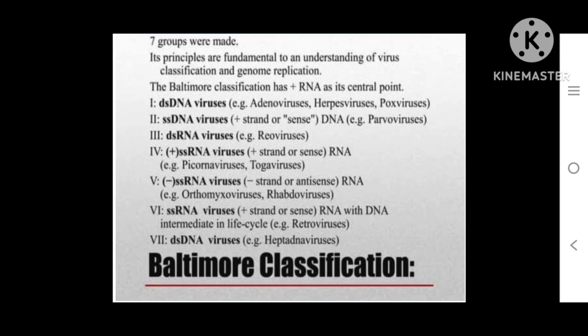The fifth group is single-stranded negative-sense RNA viruses, also called antisense strand viruses — examples are orthomyxovirus and rhabdovirus. The sixth group is single-stranded RNA viruses with a DNA intermediate in the life cycle, known as retroviruses — for example, HIV. HIV contains reverse transcriptase, which reverses the central dogma: instead of DNA being transcribed to RNA, in retroviruses RNA is used as a template to form DNA via reverse transcriptase.